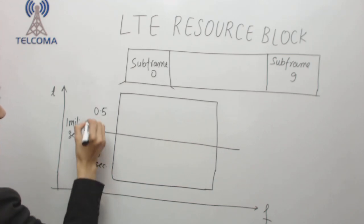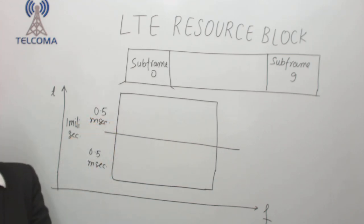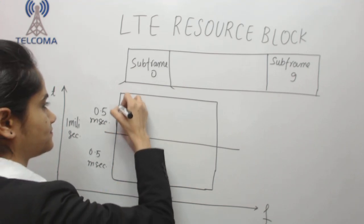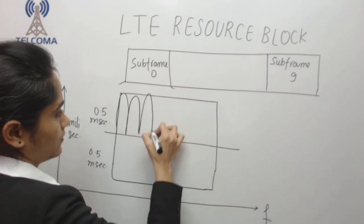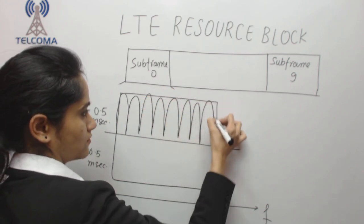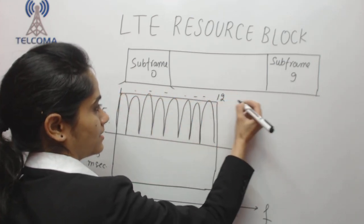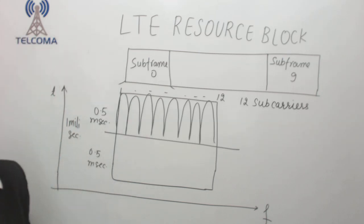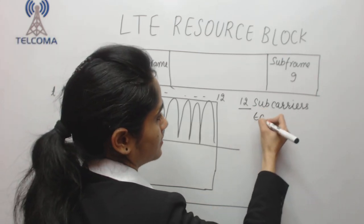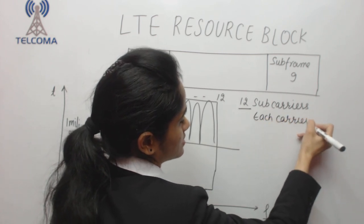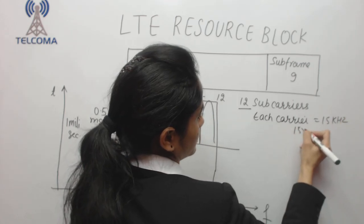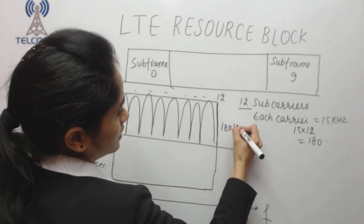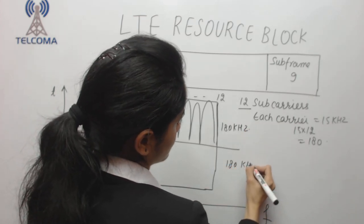In the 0.5 millisecond slot, we have sub-carriers numbered 1 to 12 — that means we have 12 sub-carriers. Each sub-carrier is 15 kHz wide, so 12 × 15 kHz = 180 kHz. So this block spans 180 kHz in frequency for a duration of 0.5 milliseconds.